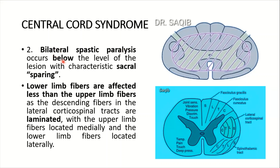Number two: bilateral lateral spastic paralysis occurs below the level of the lesion, with the characteristic sacral sparing — the sacral segments are not characteristically damaged. This is because the descending fibers in the lateral corticospinal tract are laminated. The cervical region is most medial, thoracic is next, then lumbar, and sacral is the most lateral. With upper limb fibers located medially and lower limb fibers located laterally, the upper limb fibers are more susceptible to damage.